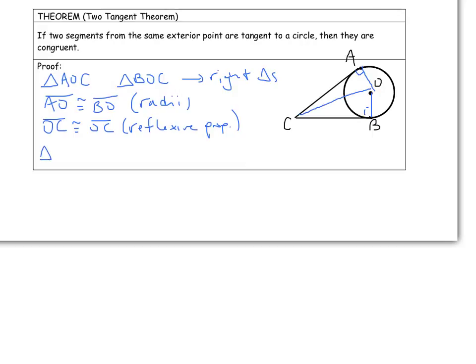So I have these two triangles, triangle AOC and triangle BOC, and they must be congruent by HL. That means that AC has to be congruent to CB by corresponding parts of congruent triangles being congruent. That would be the end of my proof.